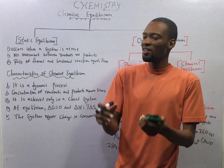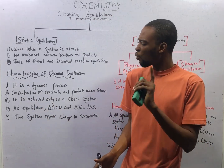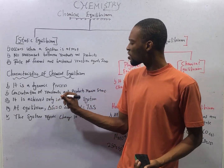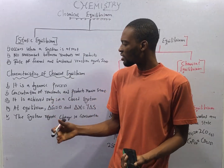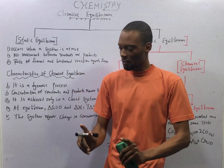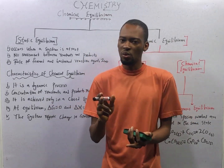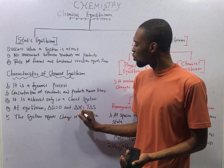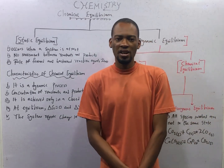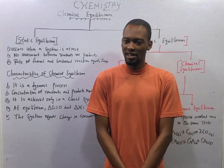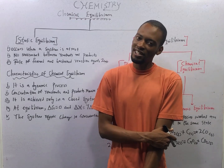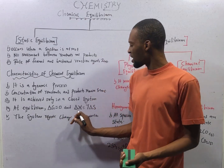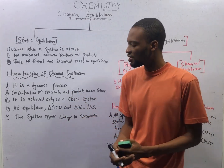Let's look at the characteristics of chemical equilibrium. One: it is a dynamic process — the concentration of reactants and products remain constant. Two: it is achieved only in a closed system. Three: at equilibrium, ΔG = 0, that is, Gibbs free energy equals zero. The relationship is ΔG = ΔH − TΔS. When ΔG is zero, the system is at equilibrium, and in this state ΔH = TΔS.